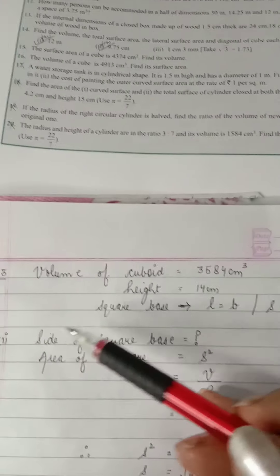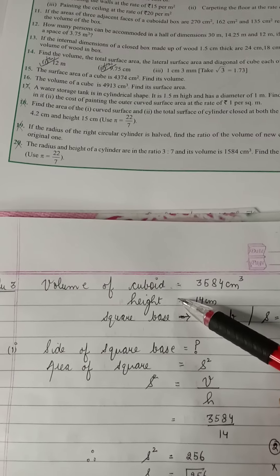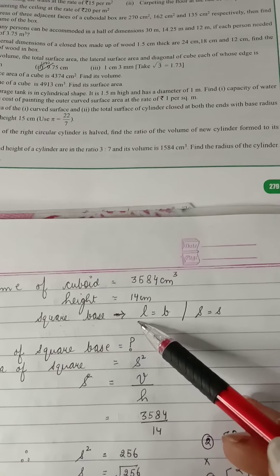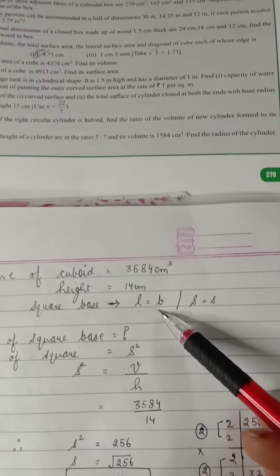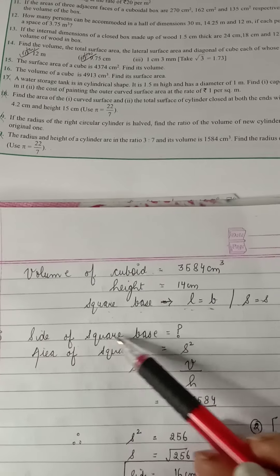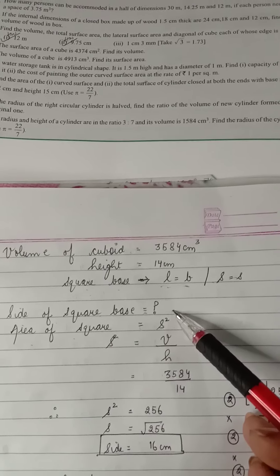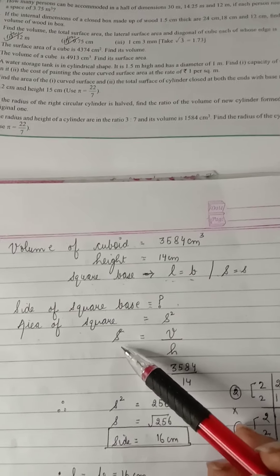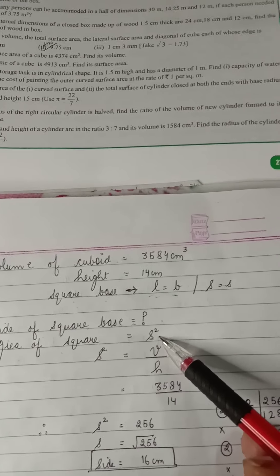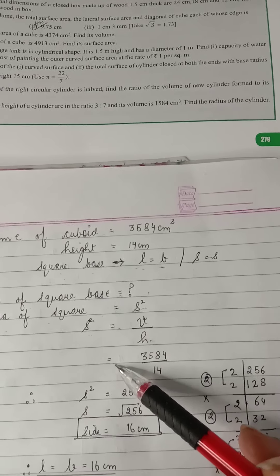Now moving on to question number 3. In third question they've given you the volume, they've given you the height, and they are saying that the base is a square. Now when they say base is a square, it means the length and the breadth both are equal, or side is equal to side. So first part you have to find the side of the square base. Apply the formula of area. Area of a square is side into side. Now here we are talking about the side, that is length and breadth, so side square is equal to volume upon height. Side square is equal to volume divided by height, and you get side square as 256.